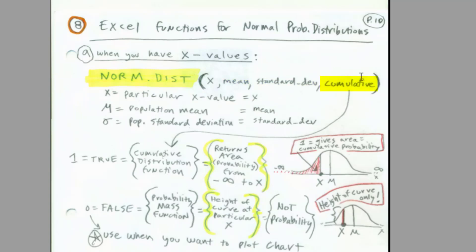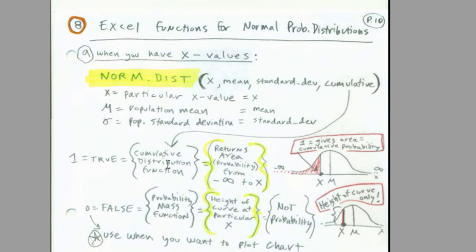You can use either x or z when using Excel functions — we'll look at both functions to calculate probability. When we have x values, we use the function NORM.DIST. We give it the x, the mean, and the standard deviation. When we give it 1 (true/cumulative), it gives us all the area from the low end up to the x we put in — from negative infinity all the way up to the x value, calculating the area under the curve. NORM.DIST with the cumulative argument TRUE returns the area probability from negative infinity to x; with FALSE it calculates the height of the curve — not probability. We use that to plot the curve.